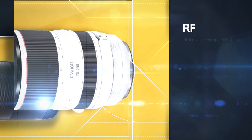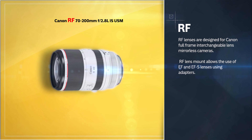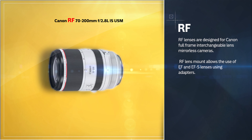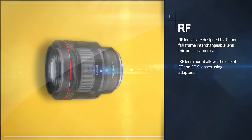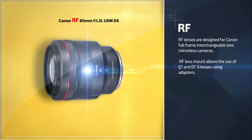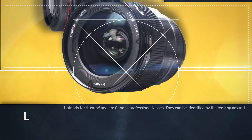RF lenses are designed for Canon full-frame interchangeable lens mirrorless cameras. The RF lens mount also allows the use of EF and EF-S lenses using adapters.